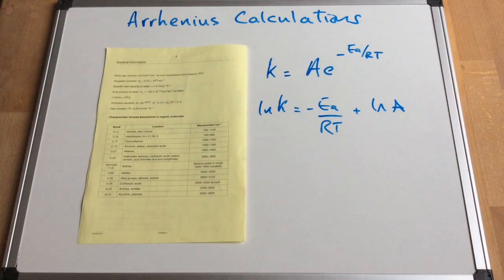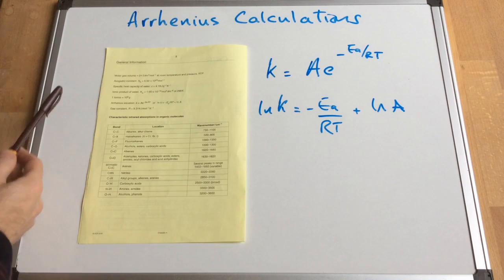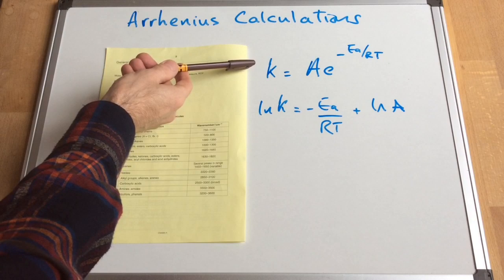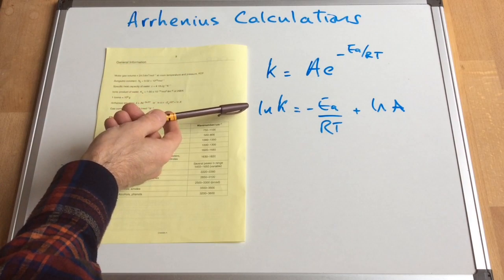So you can see on the left there I've got the datasheet. Now this one's for the OCR exam because that's the one that we do at our college. But all datasheets will have the Arrhenius equation on and I've written both forms up. There it is on the actual datasheet and we've got two forms. We've got the one we looked at in the previous video and we've got the natural log form of the equation.